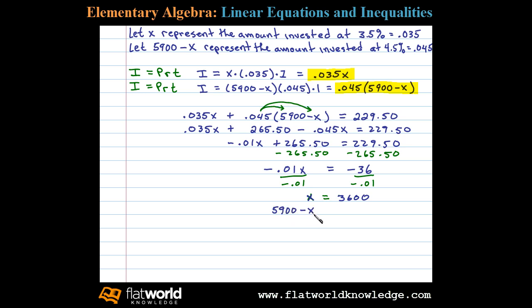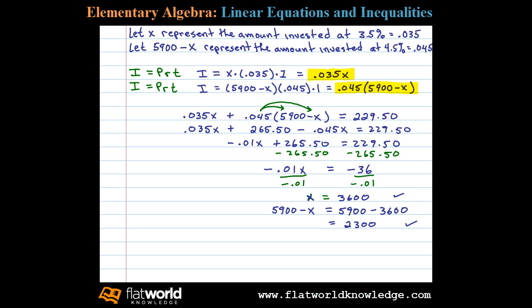We can determine the amount in the other account by back-substituting into five thousand nine hundred minus X, which in this case is five thousand nine hundred minus thirty-six hundred, which equals twenty-three hundred. So $2,300 is the amount that was invested in the account at four and a half percent.